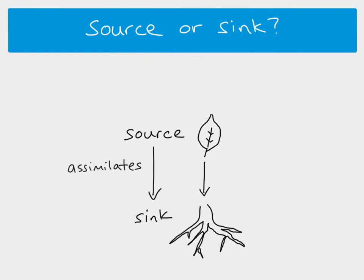Any part of the plant with a very high rate of metabolism acts as a sink. Growing parts such as flowers, fruits, and buds are sinks, so assimilates from the leaves travel to these growing parts of the plant.